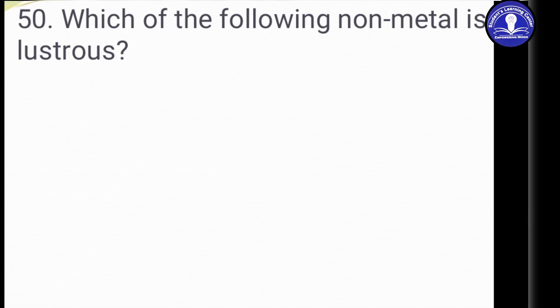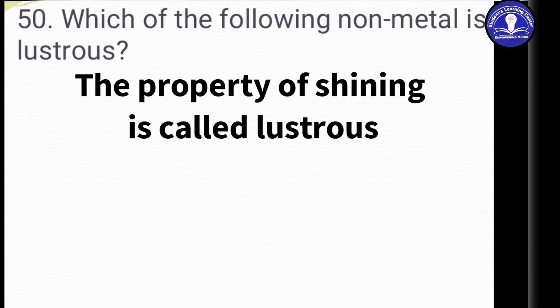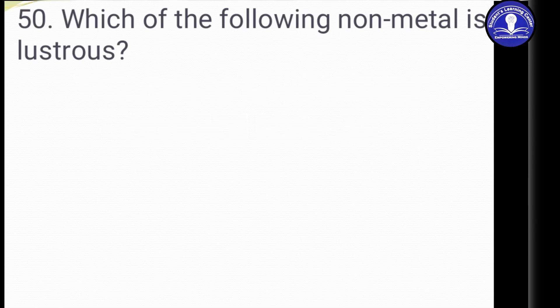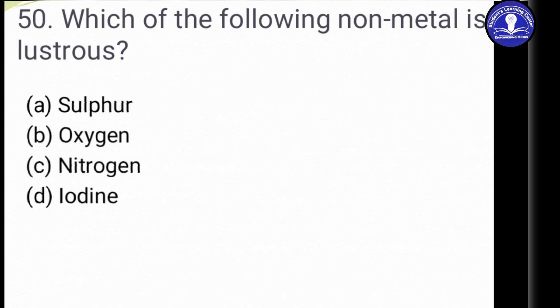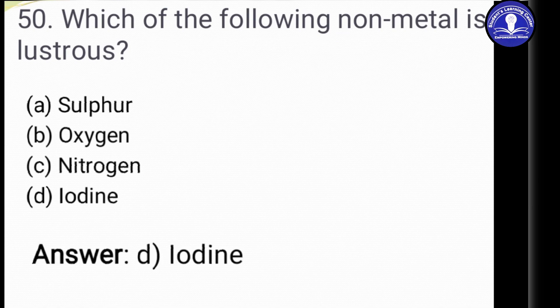Question 50: Which of the following non-metals is lustrous? Lustrous means the property of shining, which is normally a property of metals. The options are: Option A: Sulfur, Option B: Oxygen, Option C: Nitrogen, Option D: Iodine. The answer is Option D, Iodine — iodine is a non-metal that is lustrous and has a shining appearance.